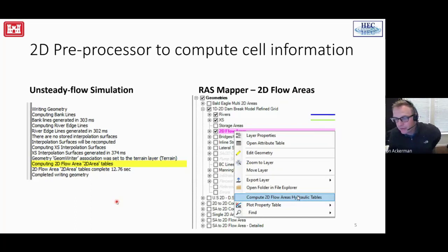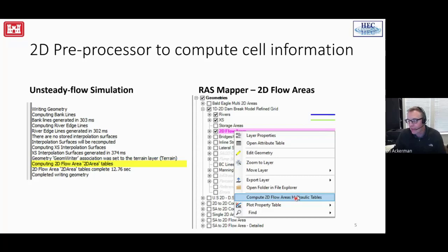After you've got your model set up, one good thing to do is compute the 2D hydraulic tables so you can get an idea of what faces are going to look like, make sure you're getting the right conveyance — especially the right Manning's n values. That's key to ensuring you have the correct land cover data set selected for your geometry. You can do that in RAS Mapper, or if you skip it, it will automatically be done during the unsteady flow simulation.